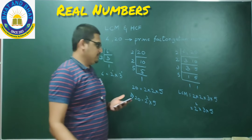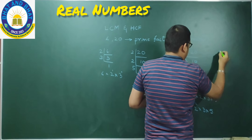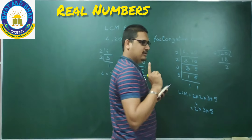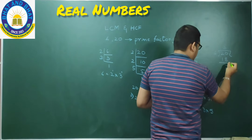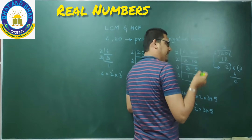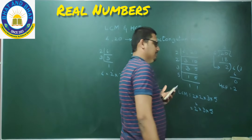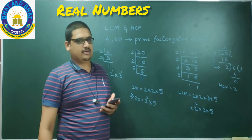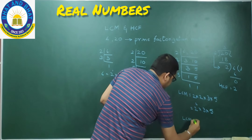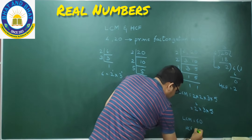Then how do we find out HCF? We can use Euclid's division lemma: divide the bigger number 20 by the smaller number 6. 6 threes are 18, remainder is 2. Since the remainder is not 0, I continue the process. Now 6 is divided by 2: 2 threes are 6, remainder becomes 0. At this step, whatever is my divisor is the HCF. So HCF of 6 and 20 is 2. My LCM has come out as 4 times 3 times 5 equals 60, and my HCF is 2.